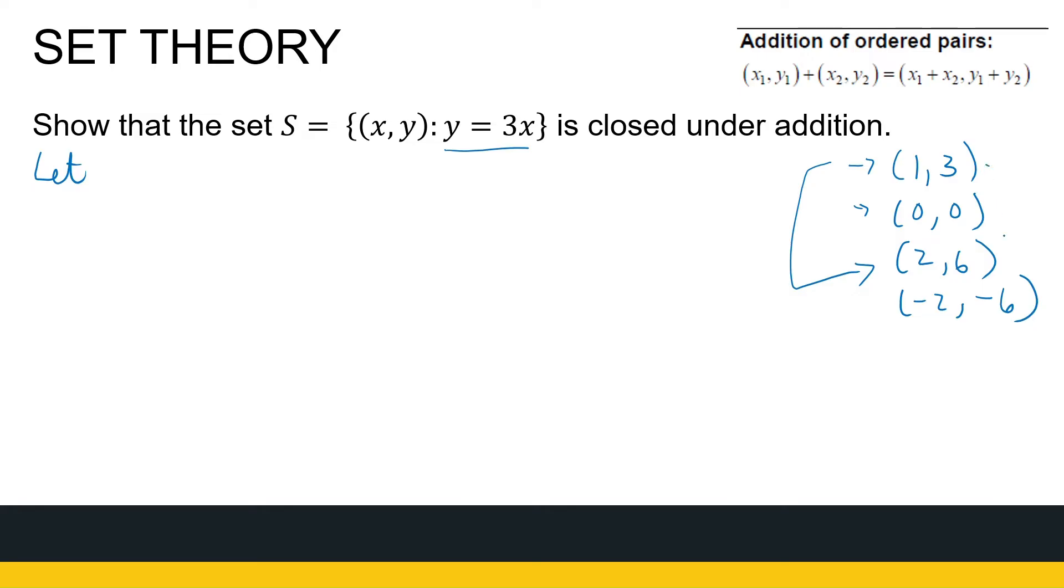Well, what we need is we need two elements of the set. But we can't just pick specific elements. They need to be generic. So let (x1, y1) and (x2, y2) be elements of S. So these are any two elements of S. All I know about them, I don't know their exact values, but I know that y1 is going to be 3 times x1, and y2 is going to be 3 times x2.